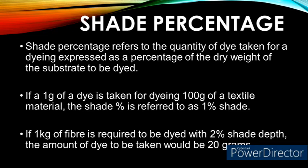Number five: Shade Percentage. Shade percentage refers to the quantity of the dye taken for dyeing, expressed as a percentage of the dry weight of the substrate to be dyed. For example, if 1 gram of dye is taken for dyeing 100 grams of a textile material, then the shade percentage is referred to as 1% shade. Similarly, if 1 kg of fiber is required to be dyed using 2% shade depth, then the amount of dye to be taken would be 20 grams.